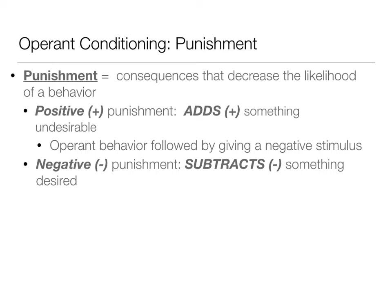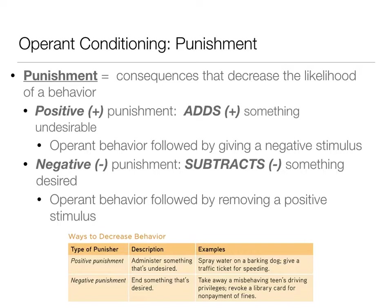Punishment decreases the likelihood of behavior. A negative punishment example is grounding — you're grounded from seeing your friends, so they've been removed, making you less likely to engage in that behavior. Other examples include revoking driving privileges or a library card for nonpayment of fees. Positive punishment examples include spraying water on a barking dog (adding something negative) or getting a traffic ticket.